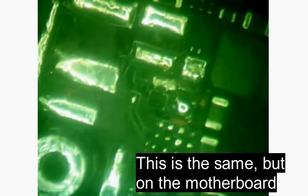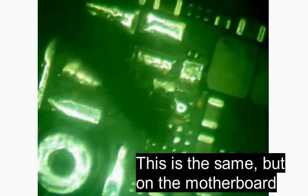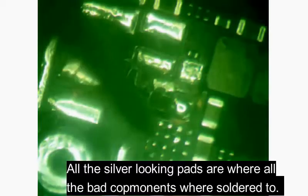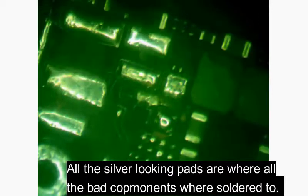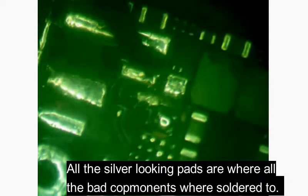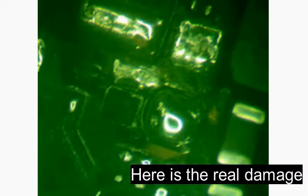This here is the same that we're looking at in the schematic, but this is actually the motherboard. All the silver-looking pads where all of the bad components were originally soldered onto. And over here is where the real damage is, which makes this repair very challenging.